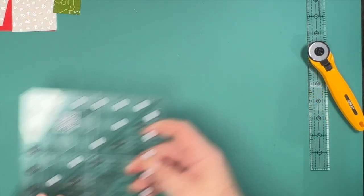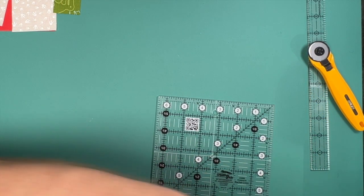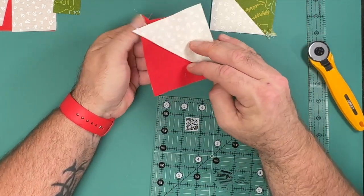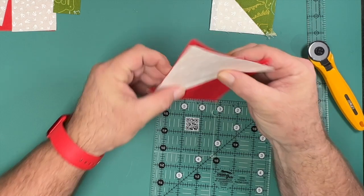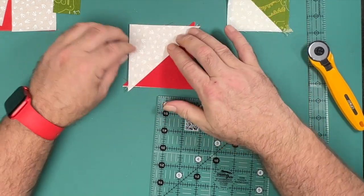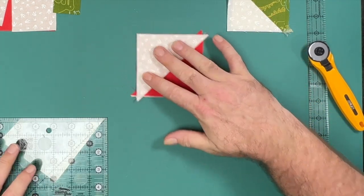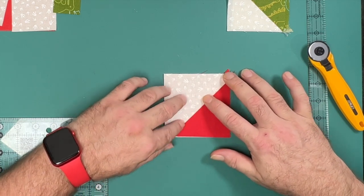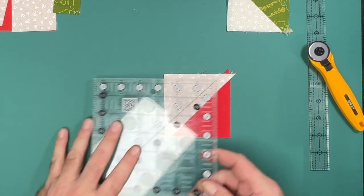We now need to trim down our half square triangles, and please pay attention as you are trimming these down to two different sizes. If you've seen any of my previous videos, you'll know that I like to trim my half square triangles two at a time. I do this by making sure that I have my two pieces nicely nested and making sure that is very snug.